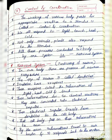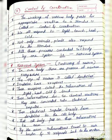Good afternoon students. Now we will start our second chapter, that is control and coordination. The working of various body parts for appropriate reaction to a stimulus is called control and coordination. That means various body parts will react to a certain stimulus, and such reactions are called control and coordination.